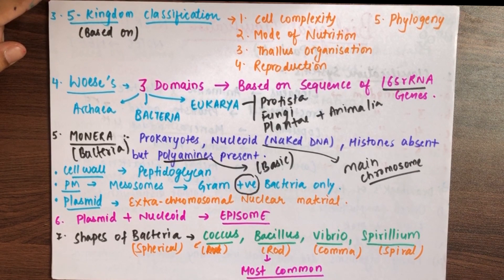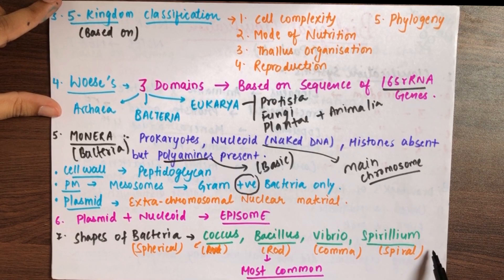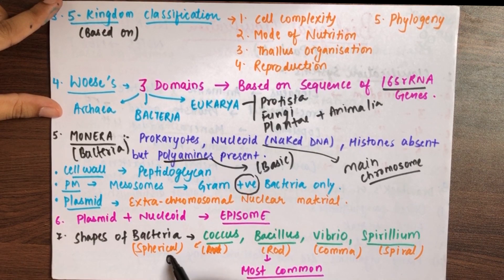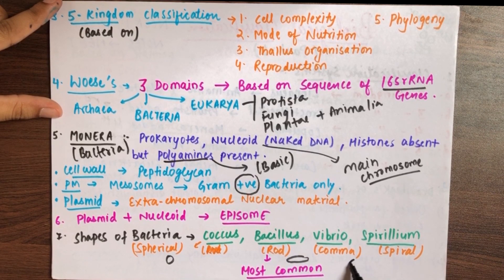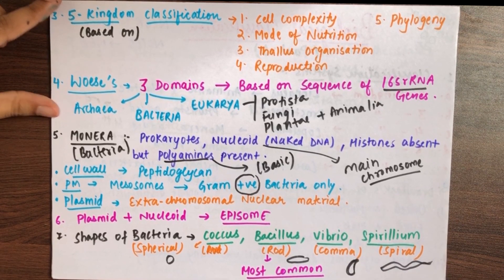The shapes of bacteria are of four types: Coccus — spherical or round bacteria; Bacillus — rod-shaped bacteria; Vibrio — comma-shaped bacteria; and Spirillum — spiral bacteria.